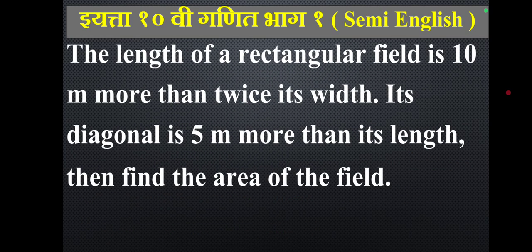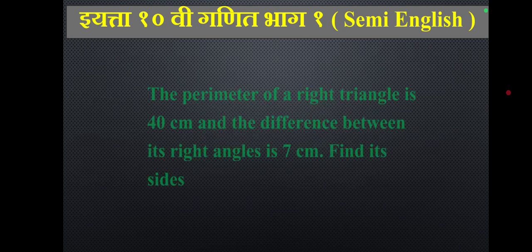The length of a rectangular field is 10 metres more than twice its width. Its diagonal is 5 metres more than its length. Find the area of the field.